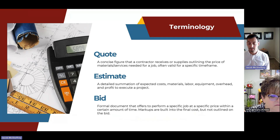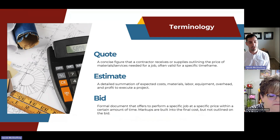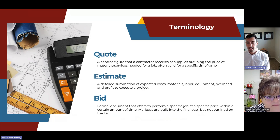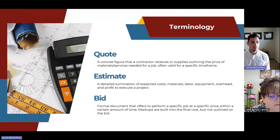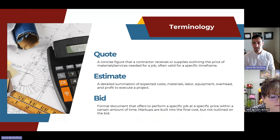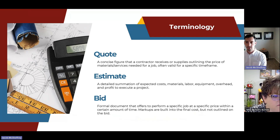In government contracting, an estimate is something a little different from what you'd expect. It's an internal document — a detailed summation of the expected costs: materials, labor, equipment, overhead, and profit to execute a project. While an estimate does lay out overhead, profit, and overall markups, that's not what you'll necessarily share with the government or a prime contractor. It's more internal so you can outline your specific costs.